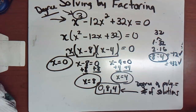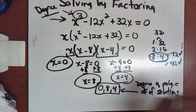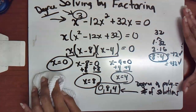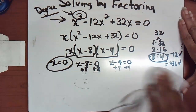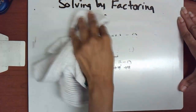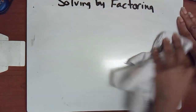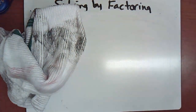To summarize solving by factoring: make sure your equation is equal to zero, then factor, then set each factor to zero and solve each equation. Of course, not every equation will already be equal to zero.